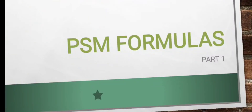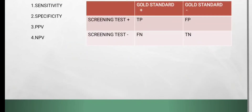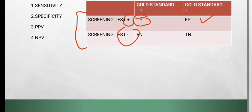Hello everyone. In this video let's discuss the community medicine formulas. First of all, we will make a two-by-two table — here we have the screening test and here we will plot the gold standard test. Those who test positive on both tests are true positive — they actually have the disease. If positive on screening but negative on gold standard, they are false positive — they didn't have the disease. Negative on screening and positive on gold standard is false negative — they had the disease but screening showed negative. And negative on both are true negative — they didn't have the disease.